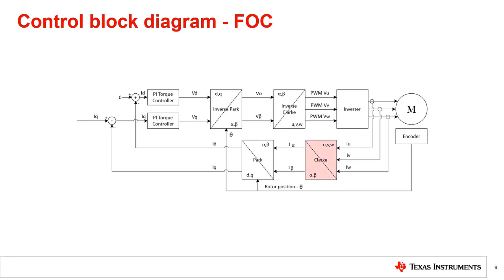U, V, and W are converted into alpha and beta terms using the Clark transform. The Park transform then takes these two new variables in addition to theta to compute the d and q vectors. Some PI controllers are applied to minimize d and maximize q so that all torque is applied perpendicularly to the rotor.